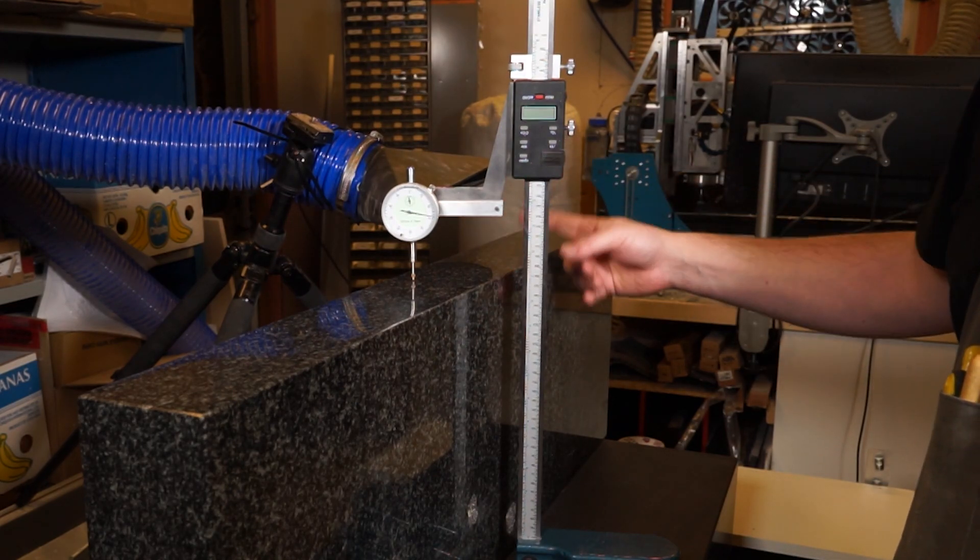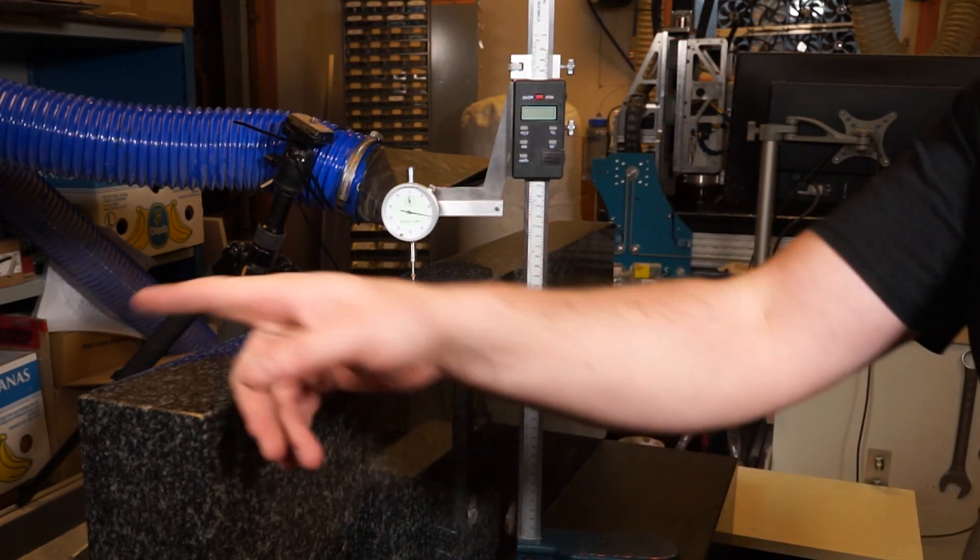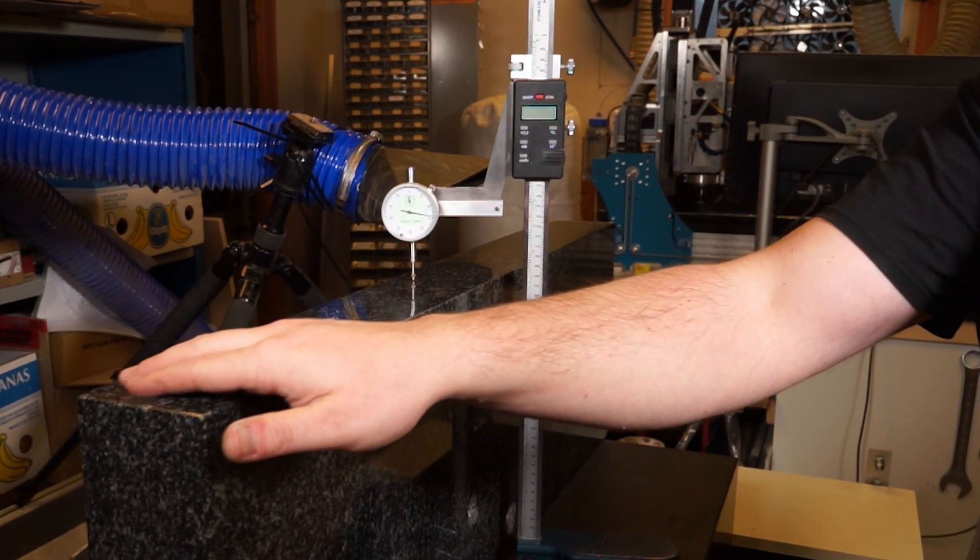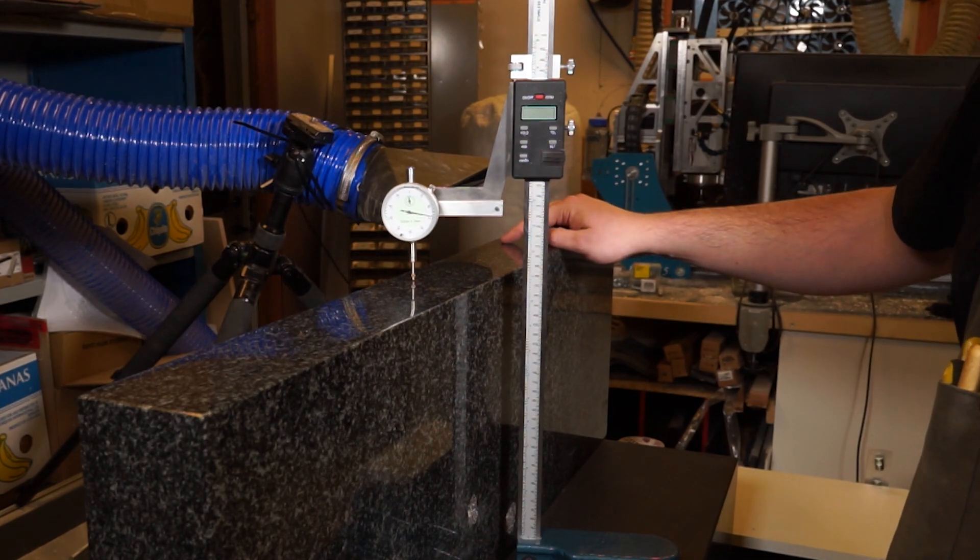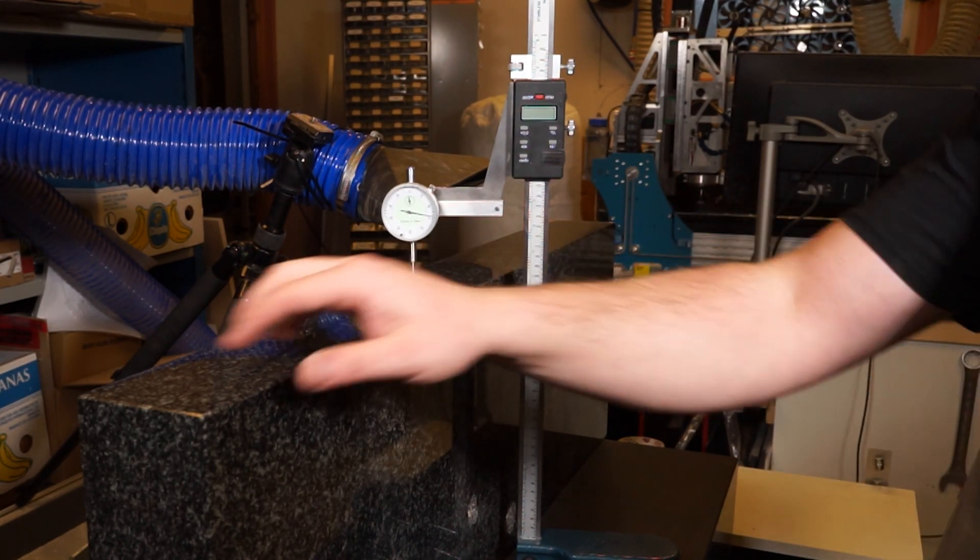And then it stays pretty consistent all the way to this end. So it's 0.3 almost all the way which is a bummer because I need to take off 0.3 to make everything level.